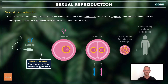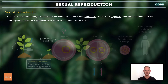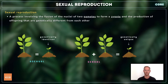Since gametes contain half of each parent's genetic information, each zygote contains 50% of the father's DNA and 50% of the mother's. Unlike with asexual reproduction, which we covered in our last lesson, this mixing of DNA results in the production of offspring that are genetically unique.